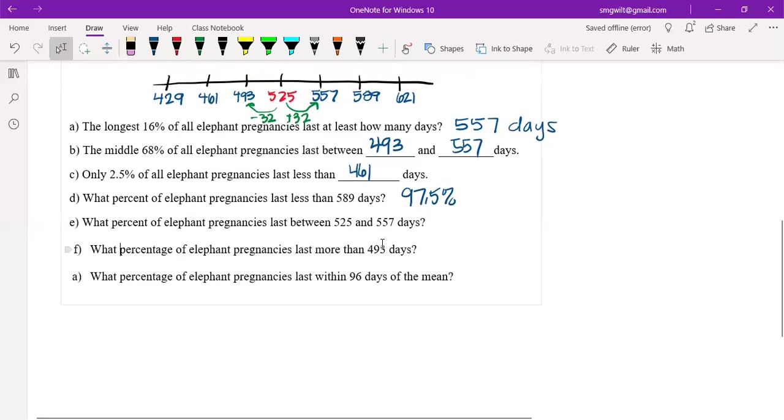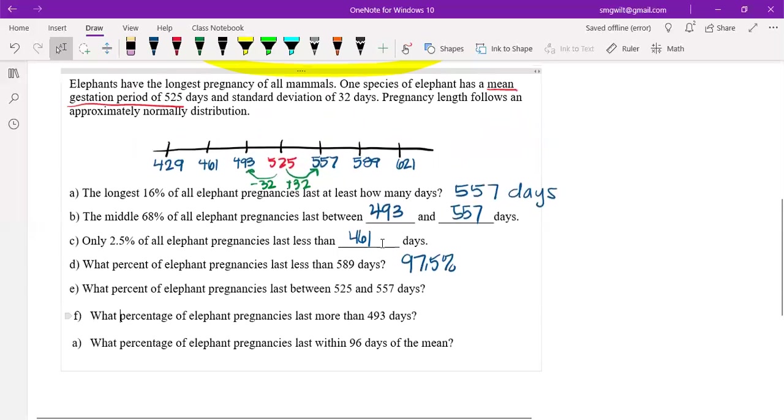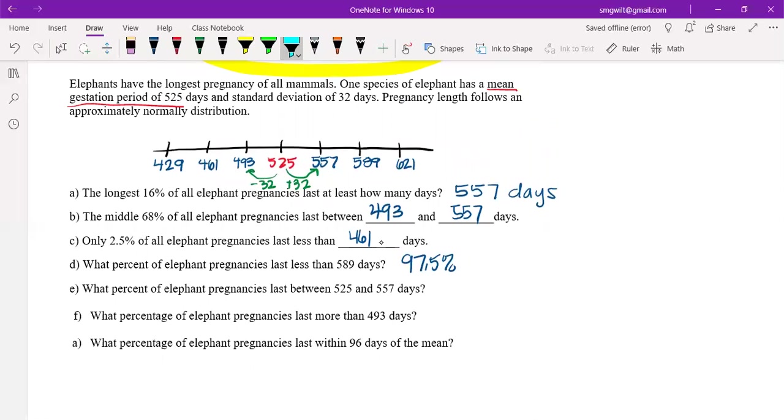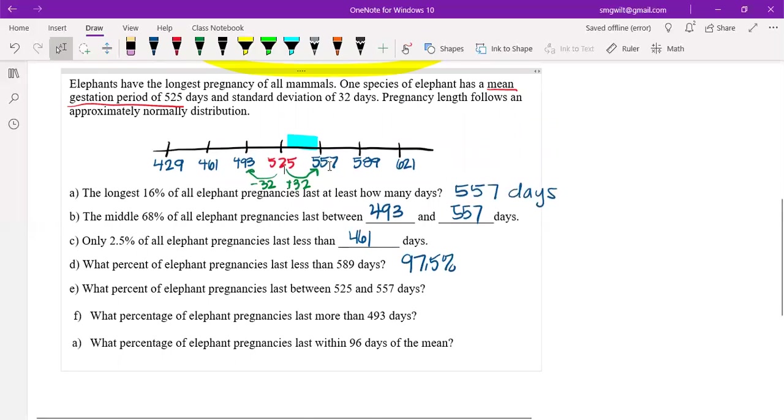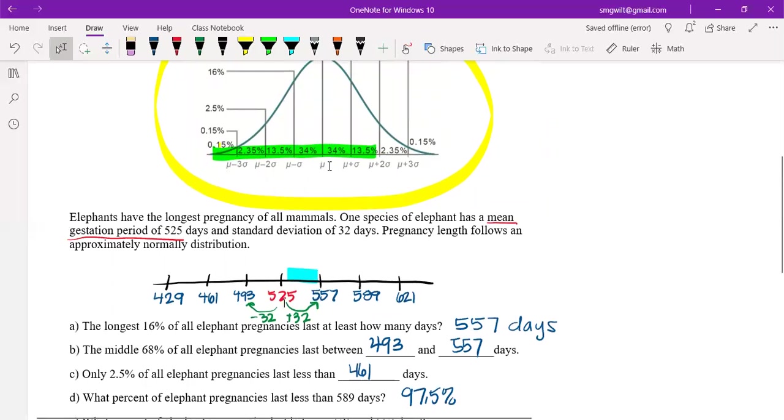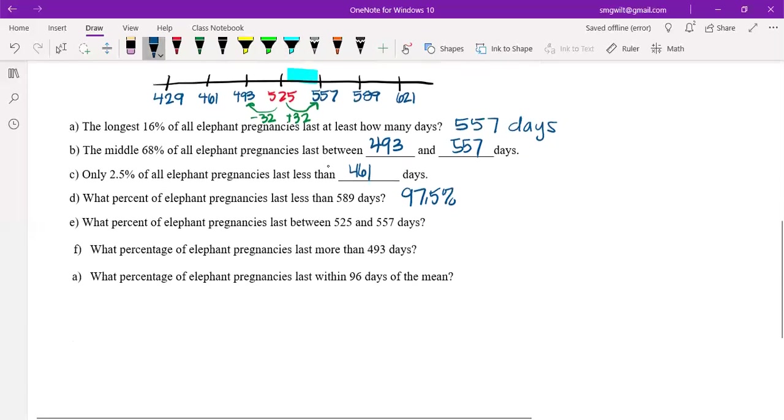What percent of elephant pregnancies last between 525 and 557 days? So it's just this chunk here. If I look at that, that's between the mean and one standard deviation above. If I go from the mean to one standard deviation above, that's 34%. So that means that 34% of these pregnancies last between 525 and 557 days.